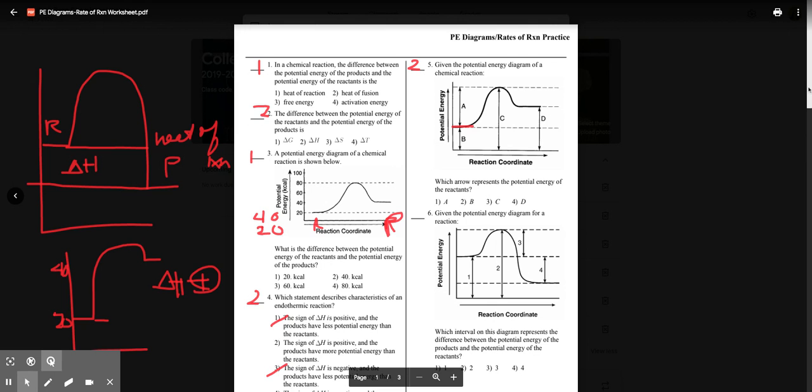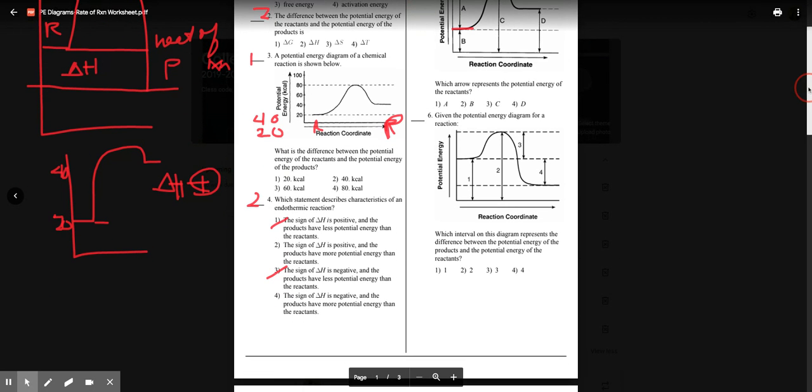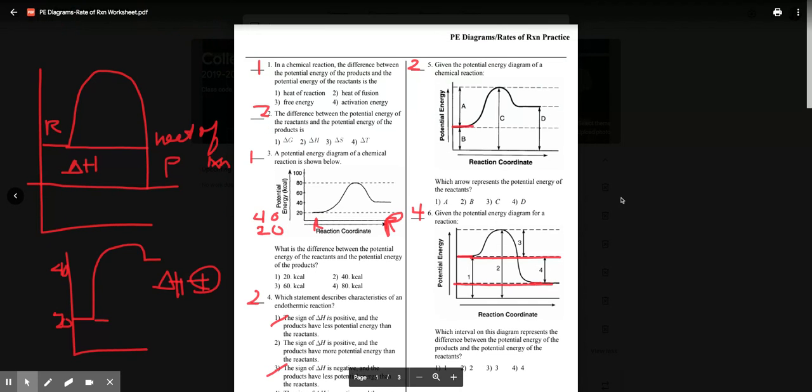Given the diagram, which interval represents the difference between the PE of the products and PE of the reactants? Once again, we're looking for Delta H. Here's the reactants, here's the products. The difference between this and that is choice four.